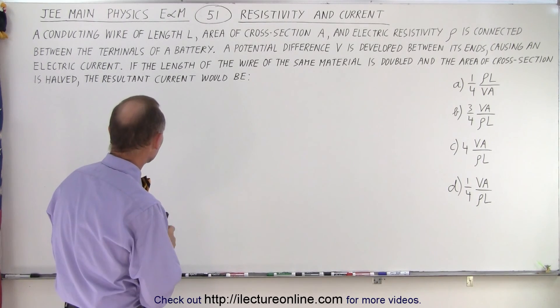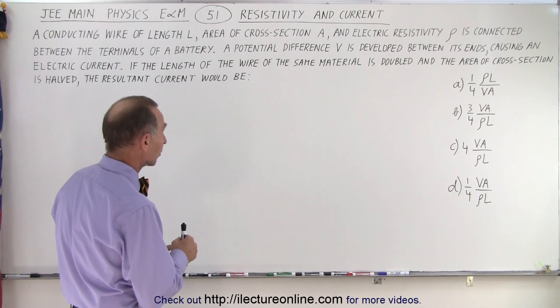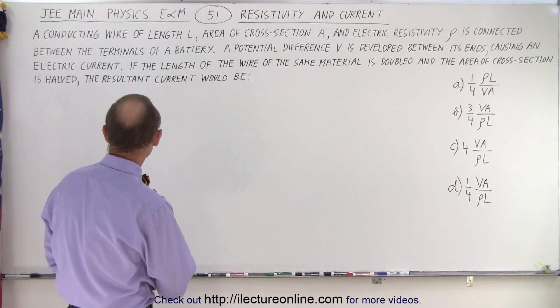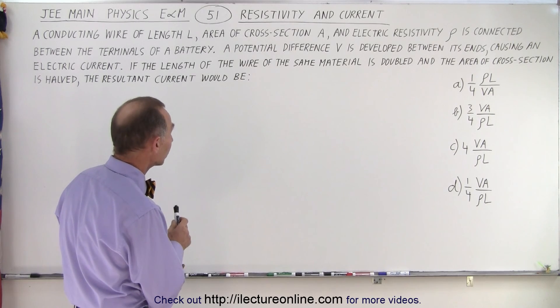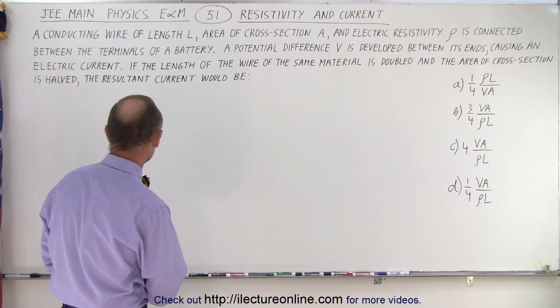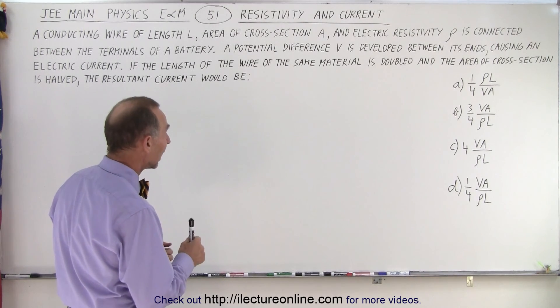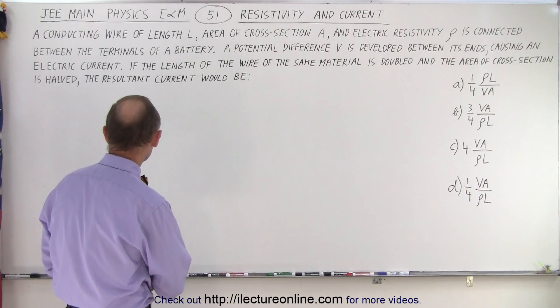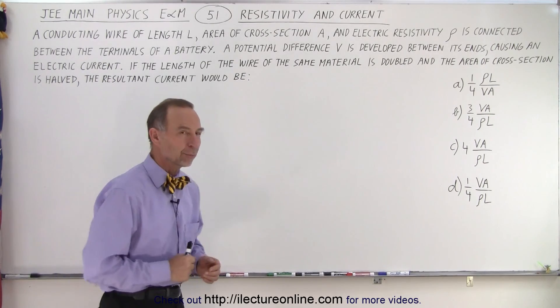A conducting wire of length L, area of cross-section A, and electric resistivity rho is connected between the terminals of a battery. A potential difference V is developed between its ends, causing an electric current. If the length of the wire of the same material is doubled, and the area of cross-section is halved, the resultant current would be, and they give us four possible answers.